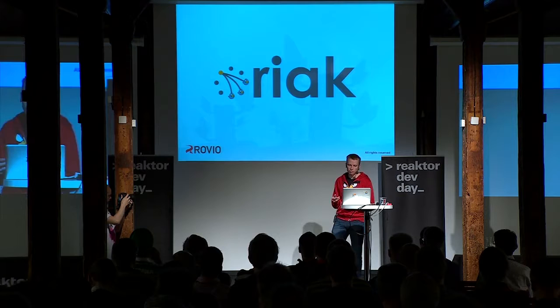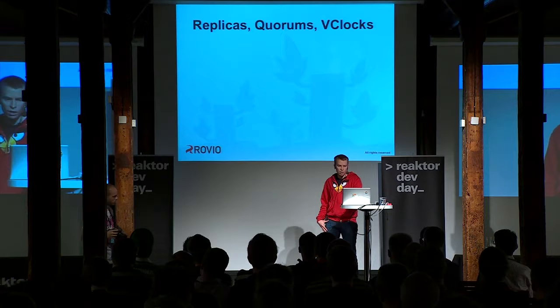So what are we using at Rovio? We're using Riak — a NoSQL key-value store which allows us to store our documents in a highly scalable cluster of Riak nodes. It's a really straightforward system, easy to operate, easy to use, and it has APIs for different languages. We've been pretty happy about it.